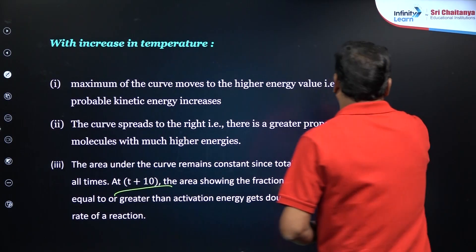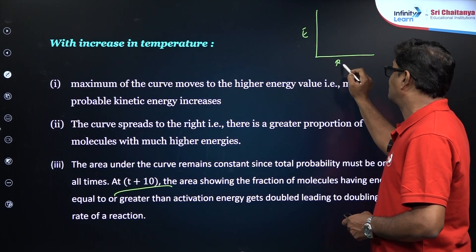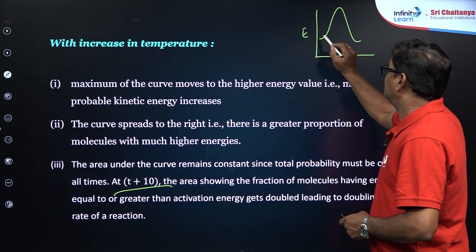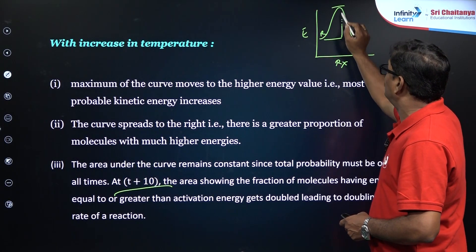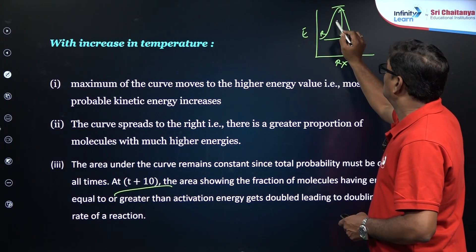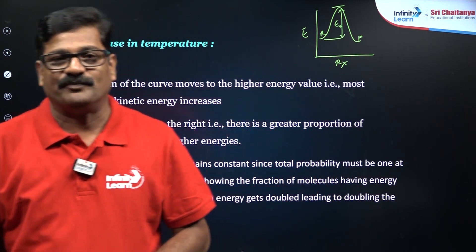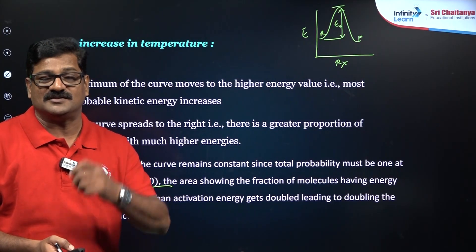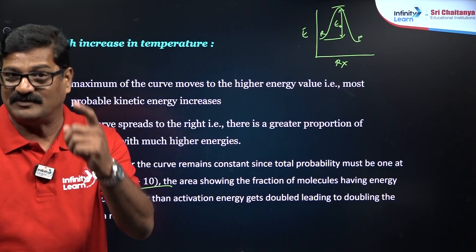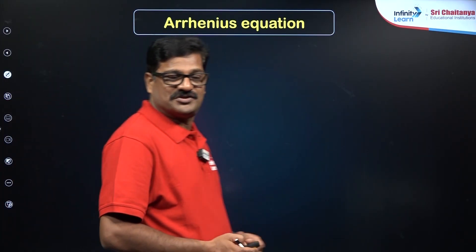What is activation energy? On an energy versus reaction progress diagram, the reactant molecules need extra energy to reach the threshold value — this extra energy is called activation energy. The fraction of molecules with energy equal to or greater than the activation energy increases as temperature increases, and this relationship is quantified by the Arrhenius equation.